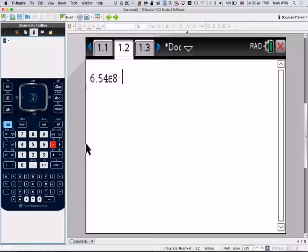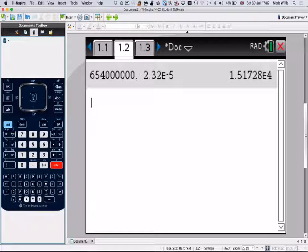Times 2.32, again standard form, so E to the minus 5. So we need to press this minus 1 and then 5. And then all we need to do is press Enter. And we see we now have the answer, 1.51728E to the 4.